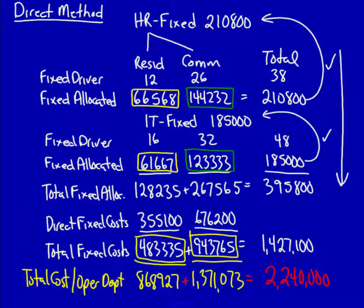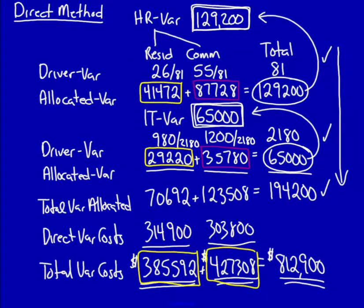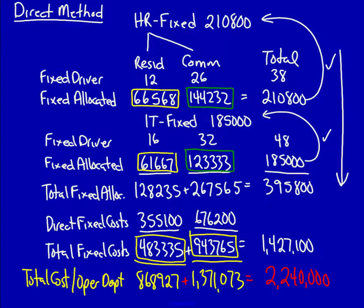If you look back at the single rate method, you'll see that we still allocated the same total amount from the service department costs over to the operating departments. In fact, we've done everything the same — we have simply had to do it twice: once for the variable costs and once for the fixed costs.